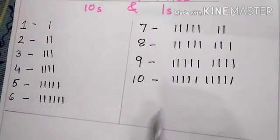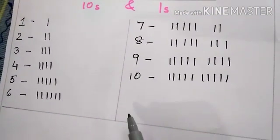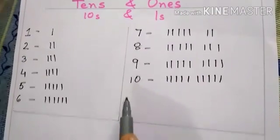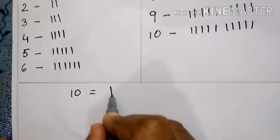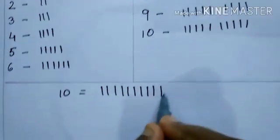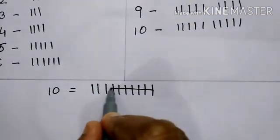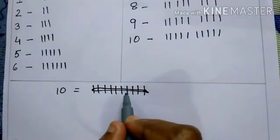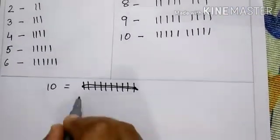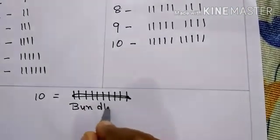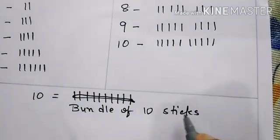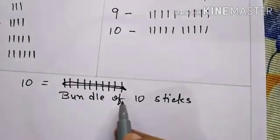But when you go to a bigger number, it becomes lengthy and time-consuming. So, to reduce this time, we can take 10 sticks and make a bundle of 10 sticks. It is a bundle of 10 sticks. You can also call it a block of 10 sticks.